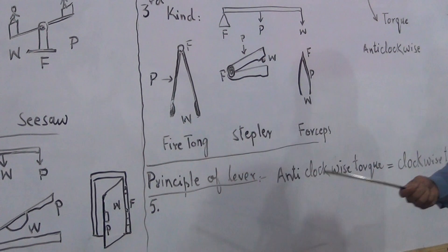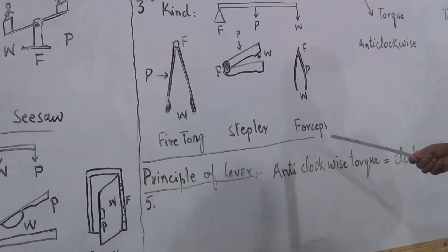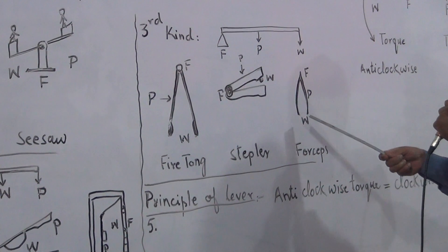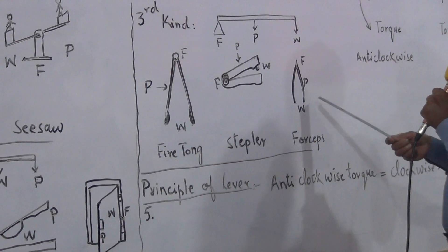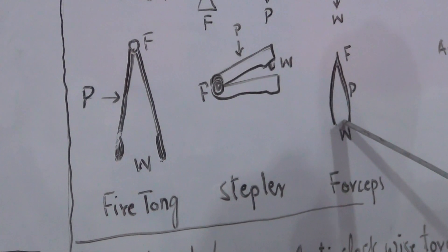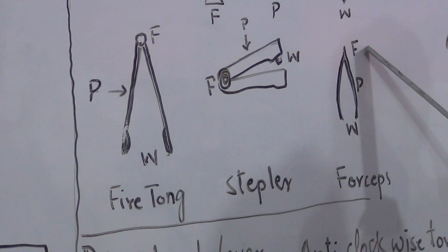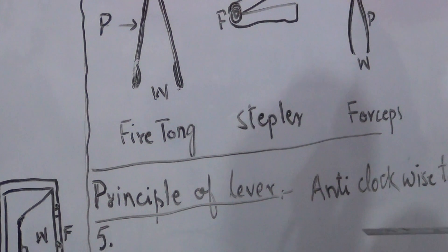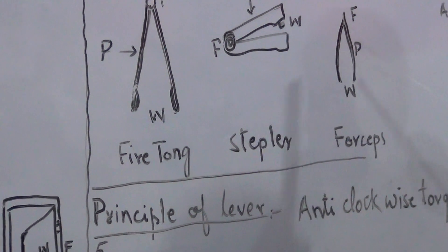You can see the shoulder — the shoulder acts as the fulcrum at the center. You can see the force applied here. Here the effort is applied — this is the fulcrum — so we call this the third kind of lever.